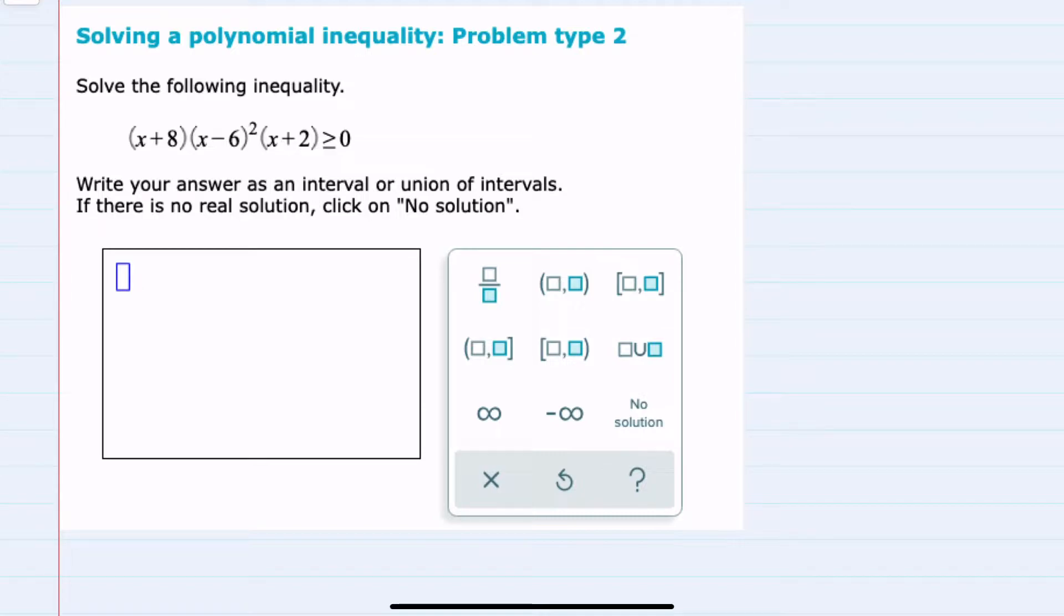So I will start by setting each of these factors equal to 0. First, x plus 8 equals 0. Solving for x, I would have x equals negative 8.